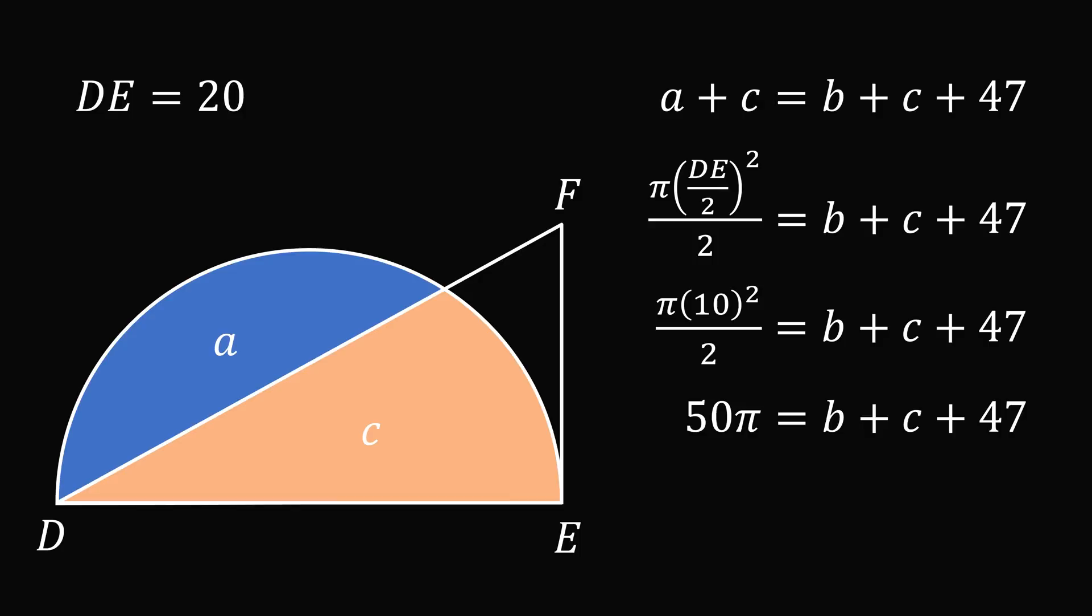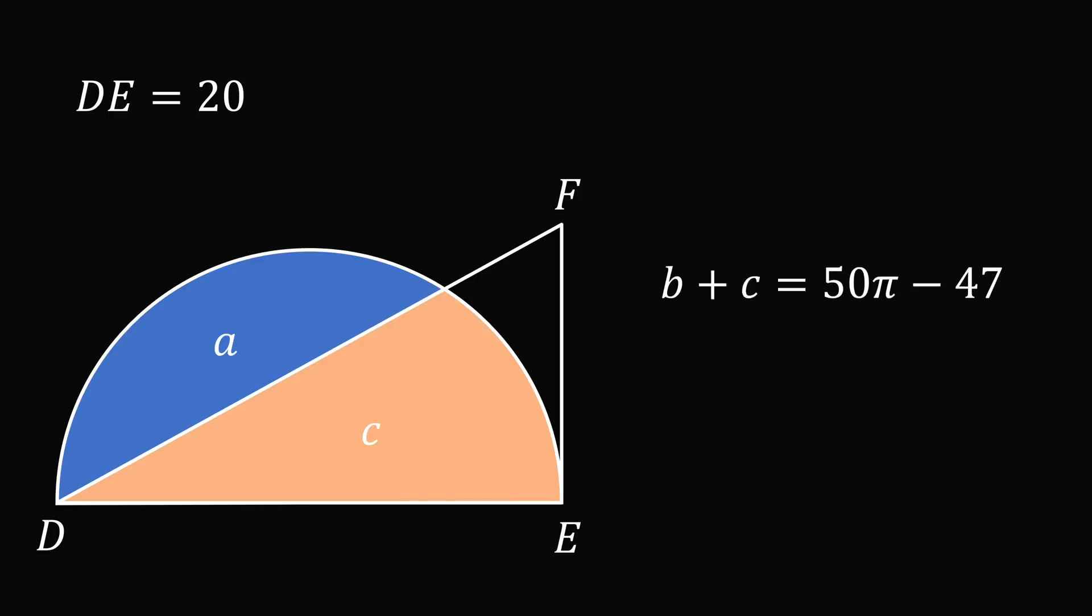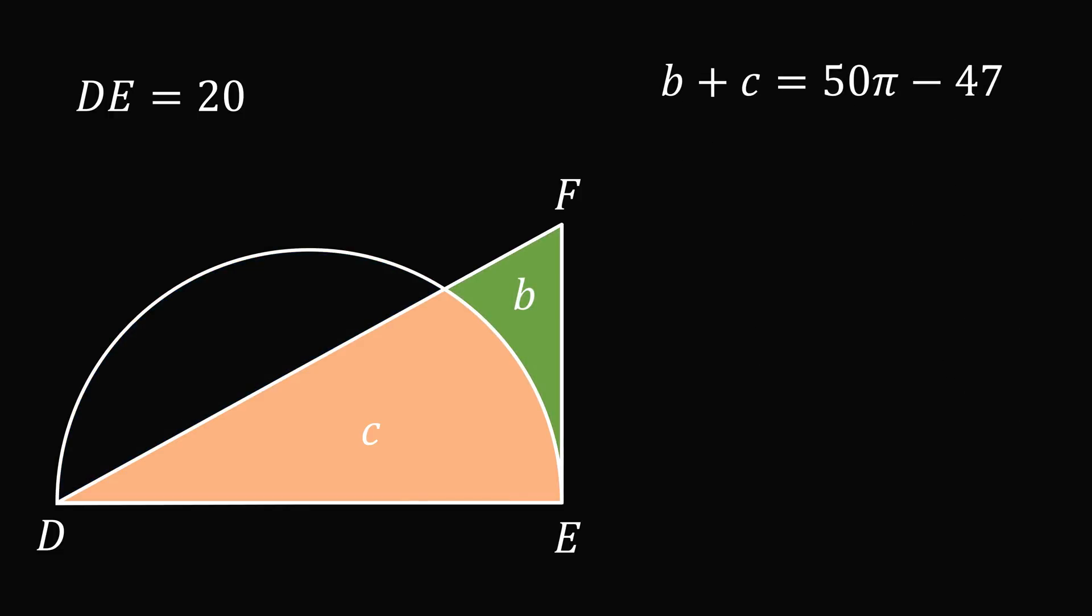We then subtract 47 from both sides to get B plus C is equal to 50π minus 47. But what is B plus C equal to? This is exactly the area of the right triangle DEF. The area of the right triangle is equal to DE multiplied by EF all over 2. Substituting DE is equal to 20 and then dividing by 2 gives 10EF is equal to 50π minus 47.